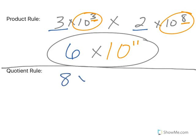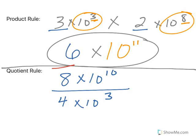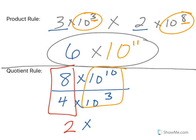The quotient rule: if I take 8 times 10 to the 10th and divide that by 4 times 10 to the 3rd, you start by dividing the numbers. 8 divided by 4 is 2. When we multiplied, we added our exponents. So when we're dividing, we're going to subtract our exponents. 10 minus 3 is 7, so my final answer would be 2 times 10 to the 7th.